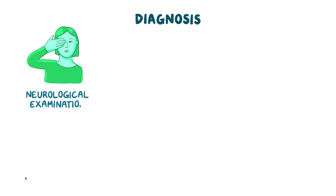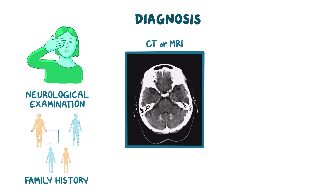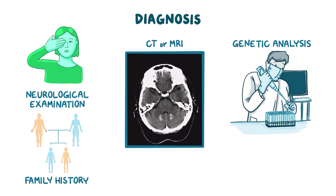Diagnosis is based on a neurological examination and family history. Neuroimaging tests like CT or MRI usually show cerebellar atrophy. Finally, genetic analysis of the involved genes confirms the diagnosis and helps identify the specific type of SCA.